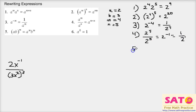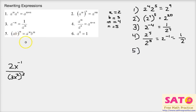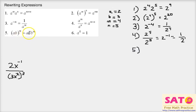So number five would be (a times b) to the m power is a to the power of m times b to the power of m. So if we write that, (2 times 3) to the fourth power would be 2 to the fourth power times 3 to the fourth power. You could also write this as 6 to the fourth power.